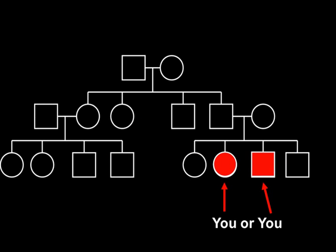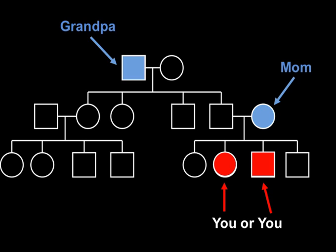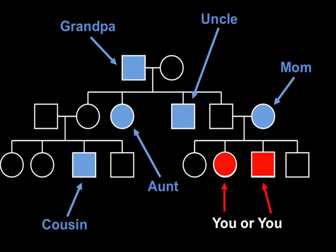Here's an example of a pedigree. If this is you, that would be your mom, your grandpa, uncle, aunt, and cousin. There would be three generations in this pedigree.